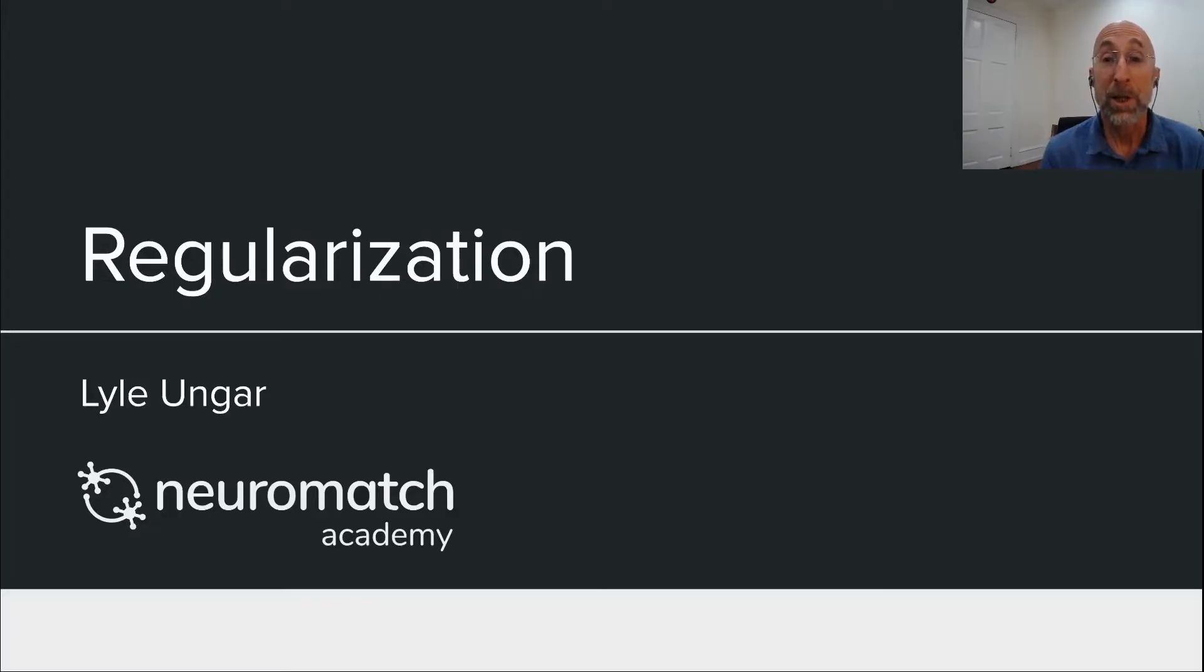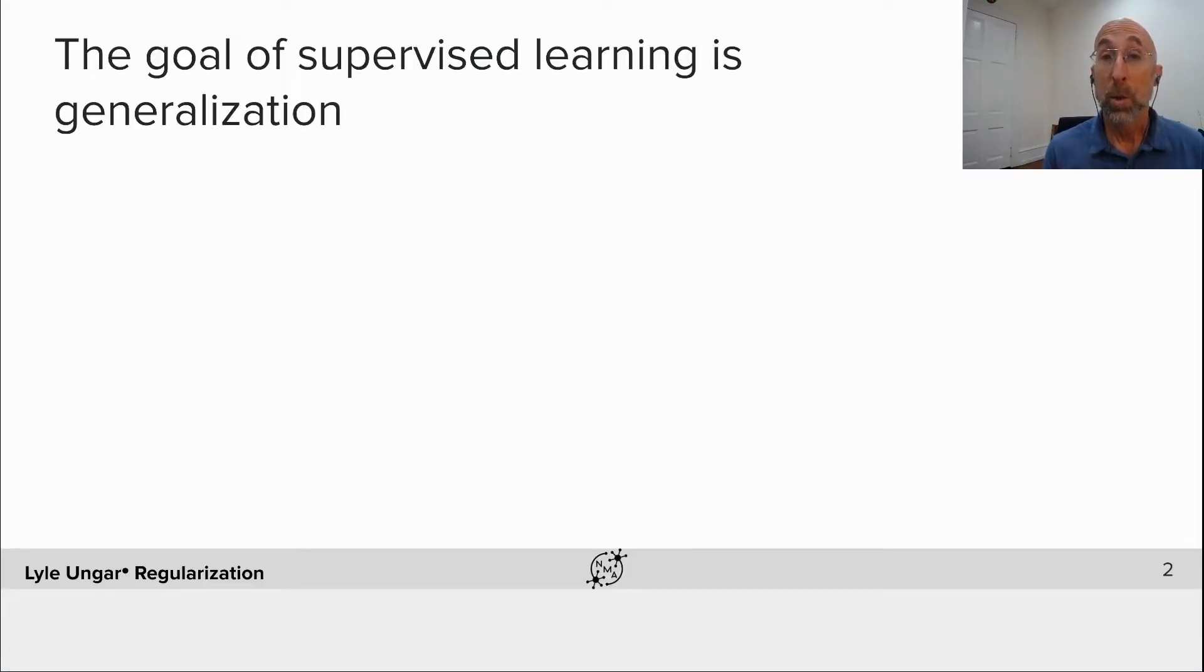Today, I want to talk to you about regularization, one of the key techniques in deep learning. We're going to focus on supervised learning, and the goal in supervised learning is generalization. In deep learning, we minimize the error on a training set. We adjust the weights to minimize the error. We usually use a really complex model, hundreds of thousands, millions, billions of adjustable parameters.